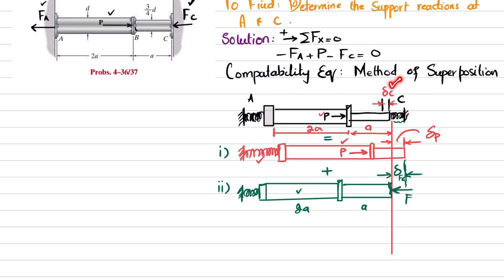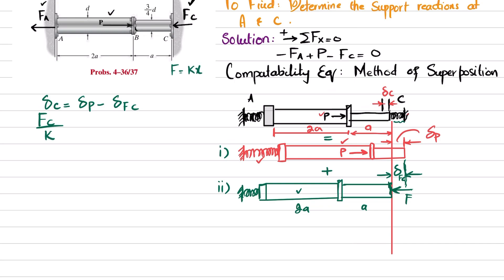So the compatibility equation is: del_C equals del_P minus del_FC. Now, del_C is the displacement of the flexible spring support at C, which equals FC over K, because from spring elastic force F equals Kx, displacement x equals F over K. So del_C equals FC over K.